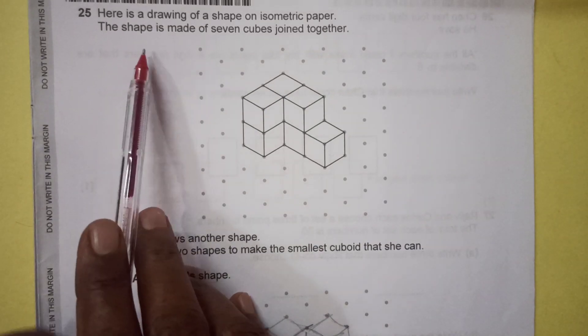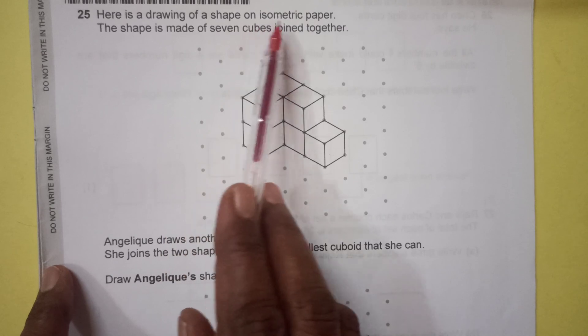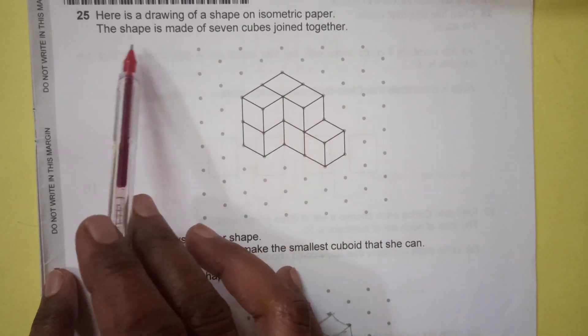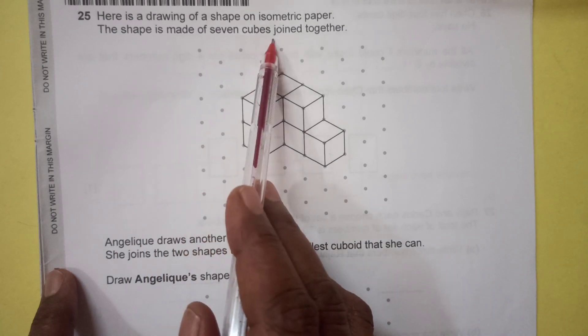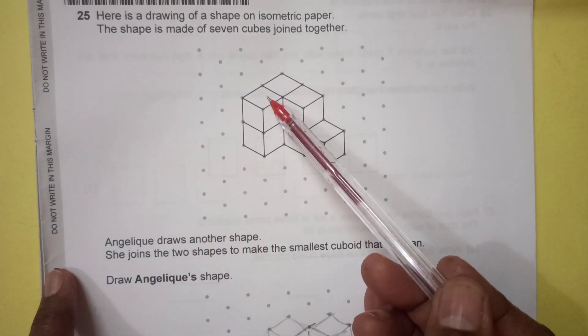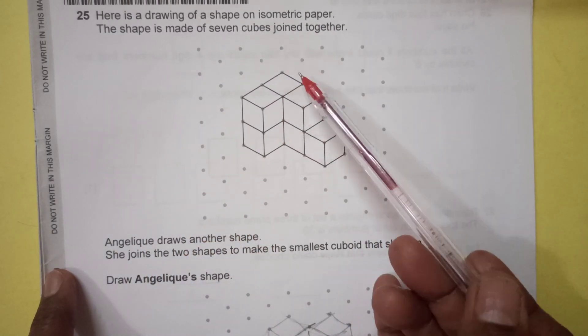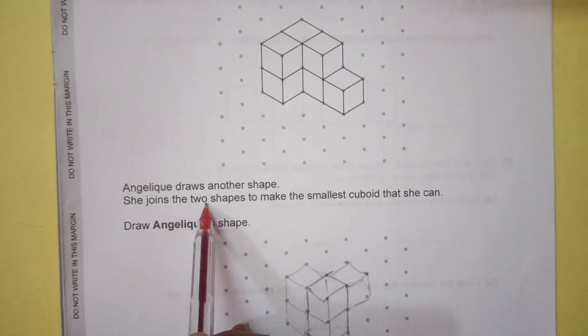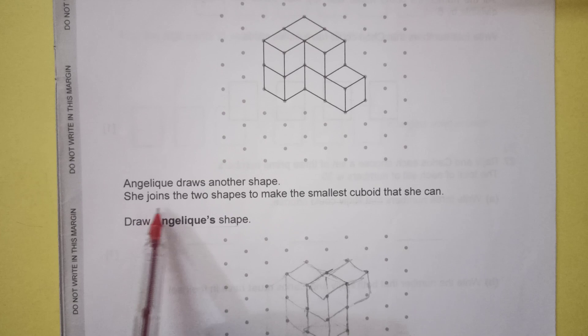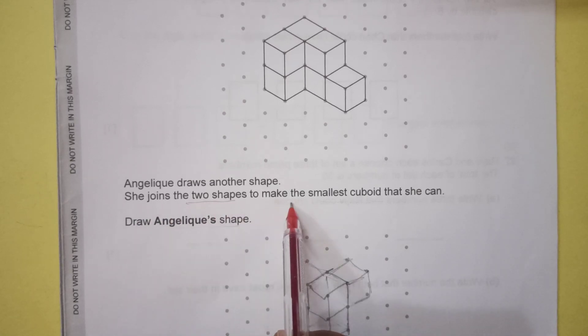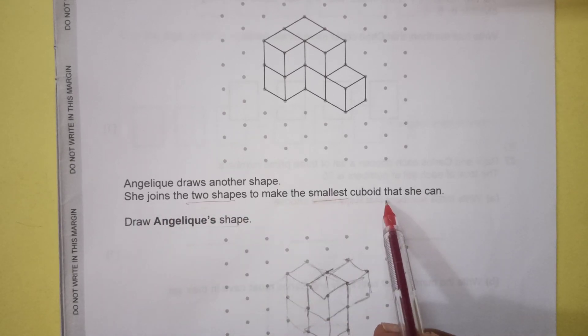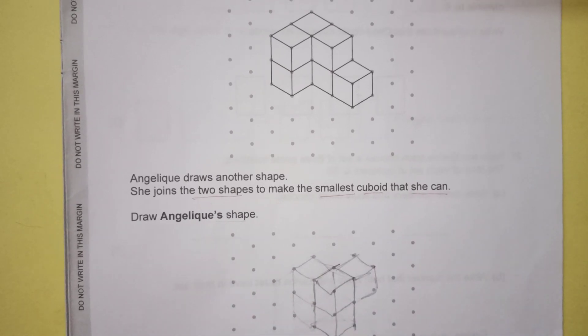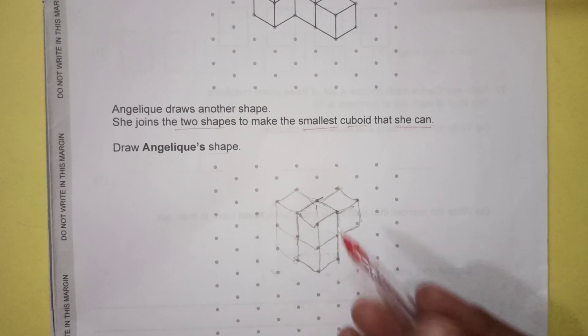Number 25, here is a drawing of a shape on isometric paper. This shape is made of seven cubes joined together. You see one, two, three, four behind five, six and seven. Angelique draws another shape. She joins two shapes to make the smallest cuboid that she can. Draw Angelique's shape. I have already drawn this one here for you.